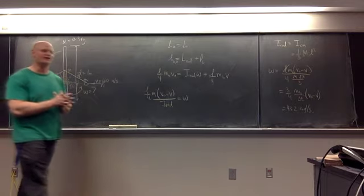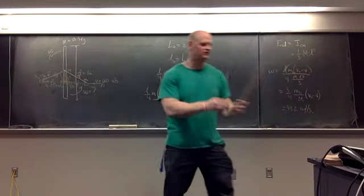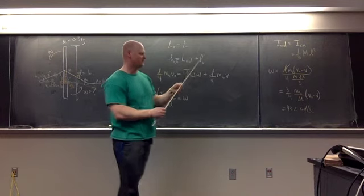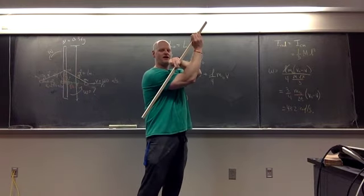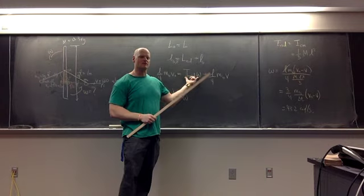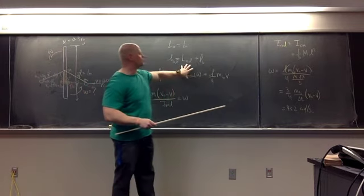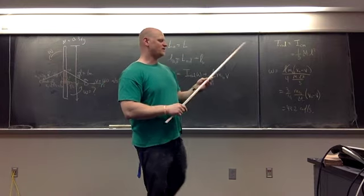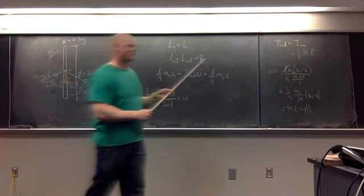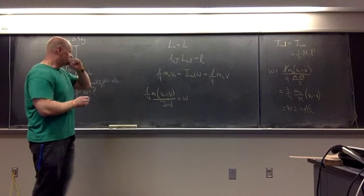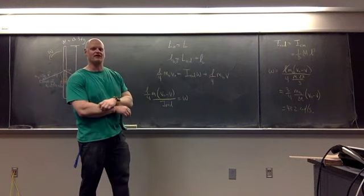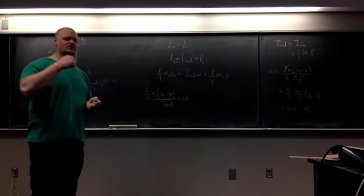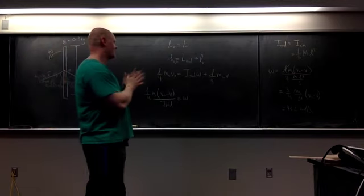So 43.2 radians per second is the final angular velocity of the rod. To summarize the modifications: if the bullet bounces off, the final bullet term becomes negative because it's moving in the opposite direction — that's an opposite angular momentum. If the bullet sticks to the rod and rotates together, the bullet term is absorbed into the total moment of inertia. In the worst-case scenario, if the bullet bounces away elastically, energy is conserved, and you'd have both conservation of angular momentum and conservation of rotational kinetic energy — two equations with two unknowns.